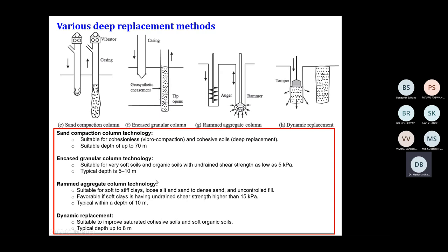There are other options such as sand compaction columns, encased granular stone columns, rammed aggregate columns, and dynamic replacement. The encased granular column is typically used when there is zero lateral support from the soil, because the encasement supports the aggregates arranged in the form of a column. The rammed aggregate column uses a simple ramming action — it is a primitive technology. Dynamic replacement we have already understood in a previous ground improvement chapter.